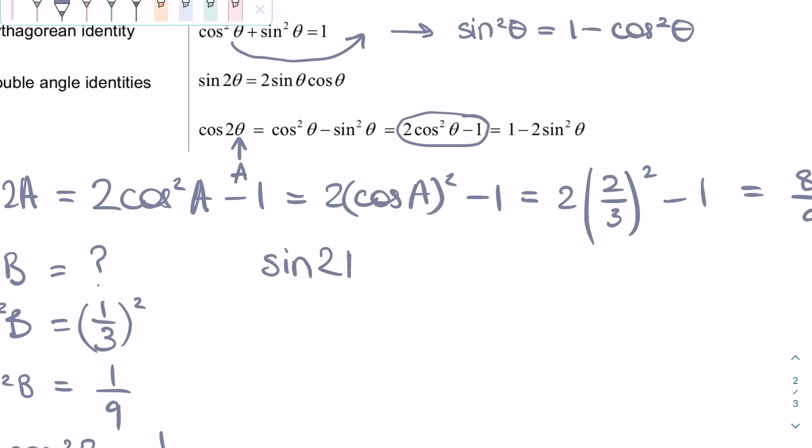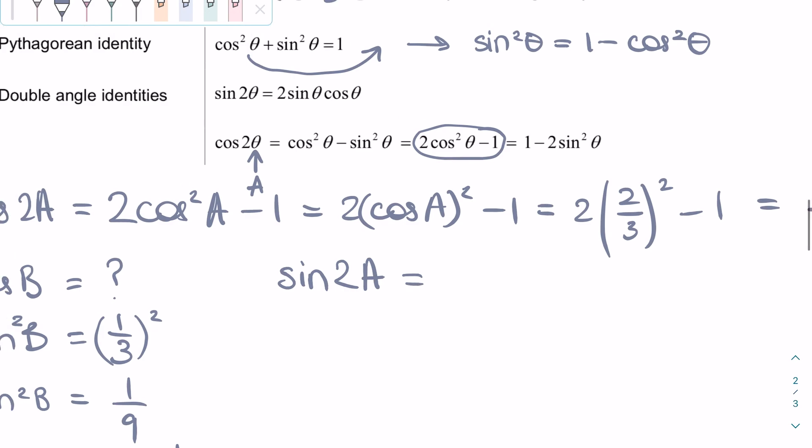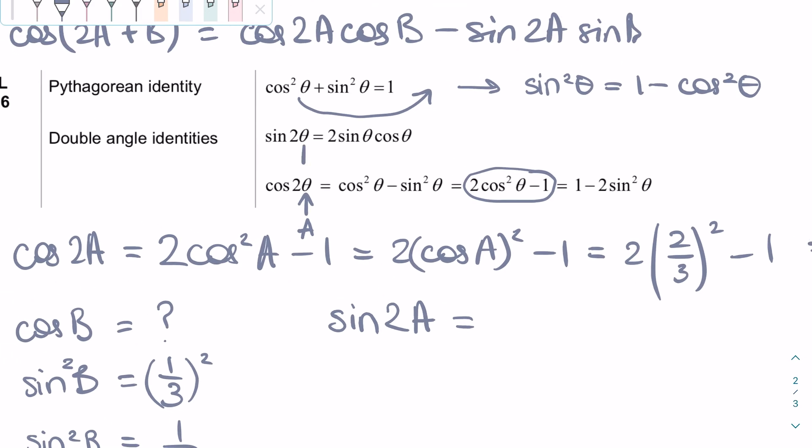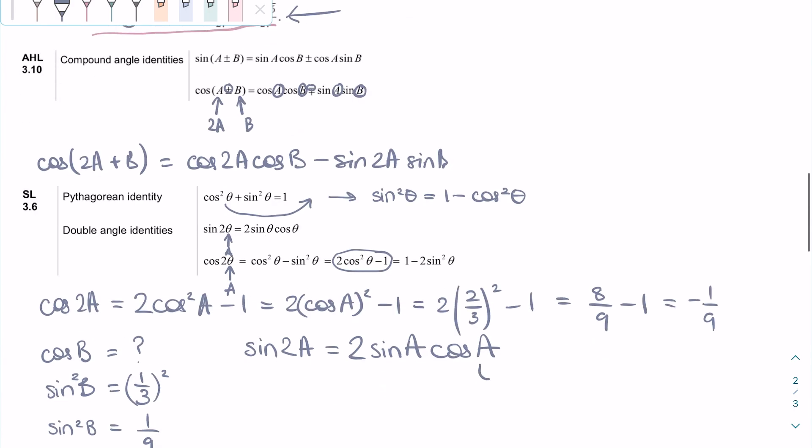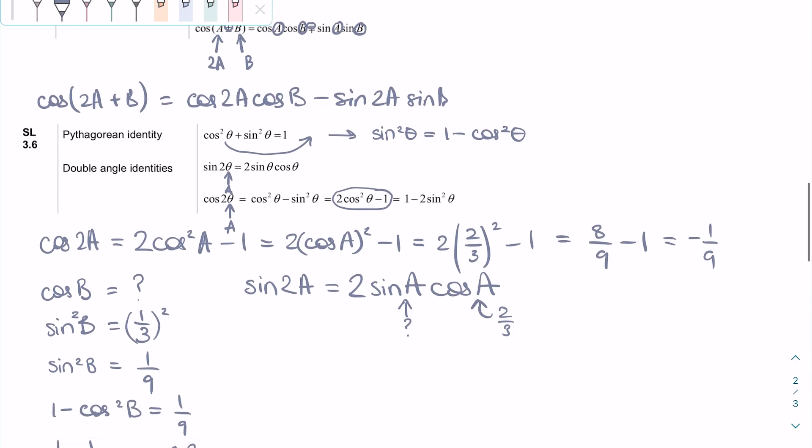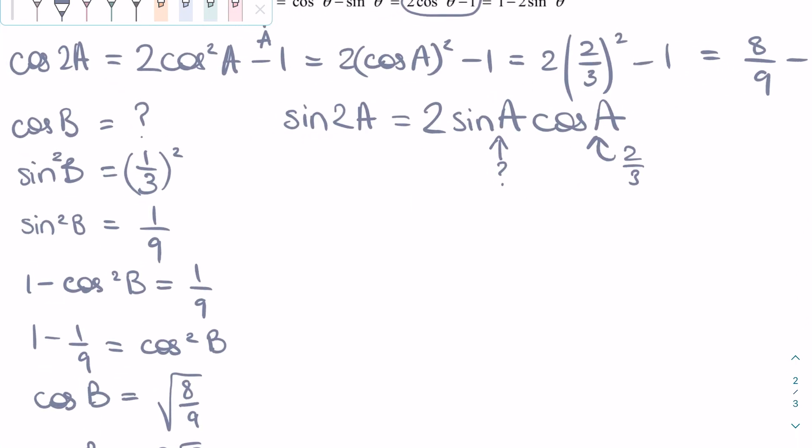Next, to find sine 2A, we need to use another double angle identity. We can rewrite it as 2 sine A cosine A. Immediately, we can replace cosine A with a numerical value of 2/3. Now we just need to find sine A.